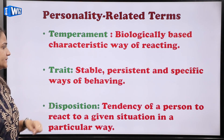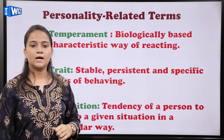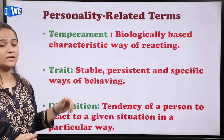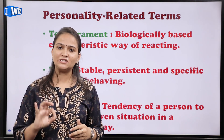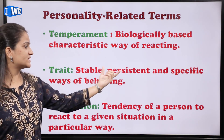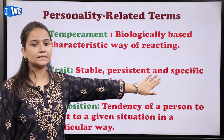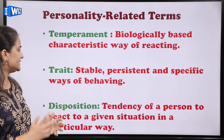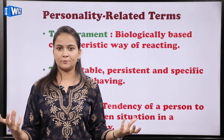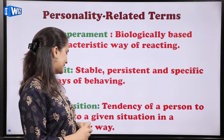Next is trait। Traits are stable, persistent and specific ways of behaving। जैसे for example, punctuality को हम trait कह सकते हैं, क्योंकि stable है। अगर एक इनसान रोज अपने office सुबह 9 o'clock sharp पहुँच रहा है, तो ये trait है — stable है, persistent है और specific way of behaving है। एक इनसान में एक से ज्यादा भी traits होते हैं, और ये traits मिलकर इनसान के self-concept को establish करते हैं।